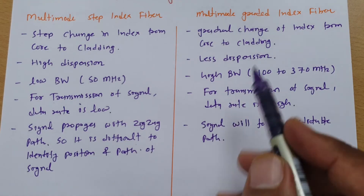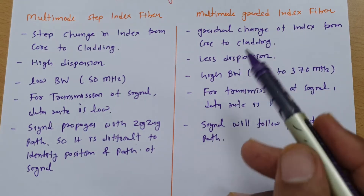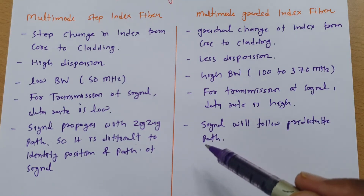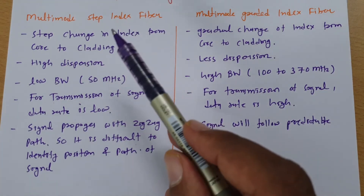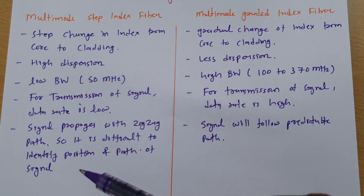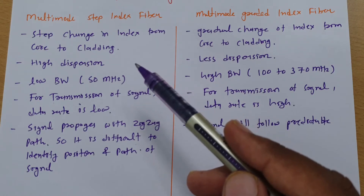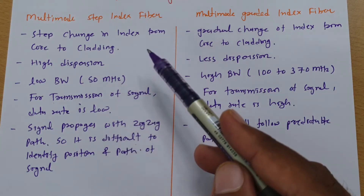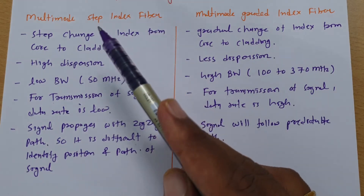For Graded Index Fibre, the change in refractive index is gradual, so the signal will not follow a zigzag path. We can predict the path of the signal, and mathematical analysis becomes easier. In the case of Step Index Fibre, the signal follows a zigzag path, making it difficult to identify the position and path of the signal. Mathematics for calculating dispersion and attenuation quantity is also more difficult.